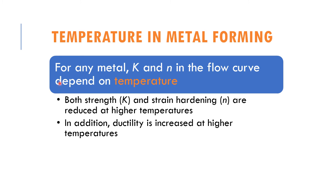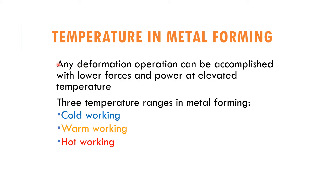For any metal, the K and N values in the flow curve are dependent on temperature — they are very sensitive to it. Both the strength coefficient K and strain hardening exponent will be reduced when temperature is high. In addition, ductility will also increase when temperature increases. Due to that, the temperature in metal forming is classified into three levels.